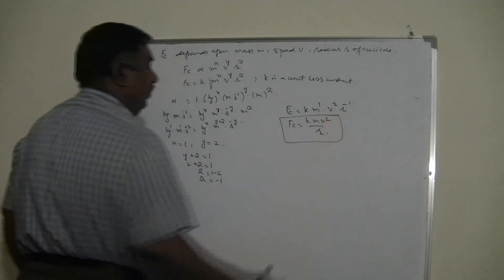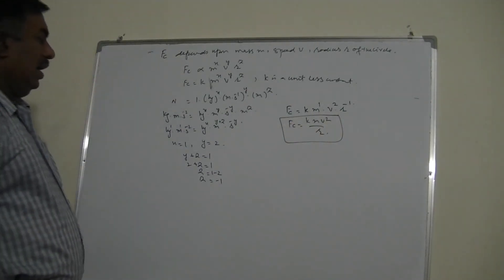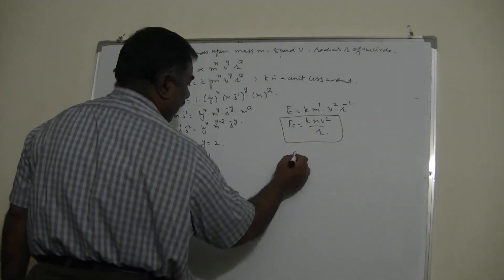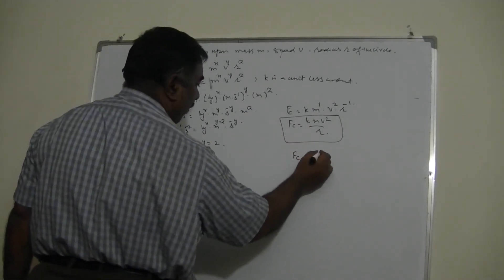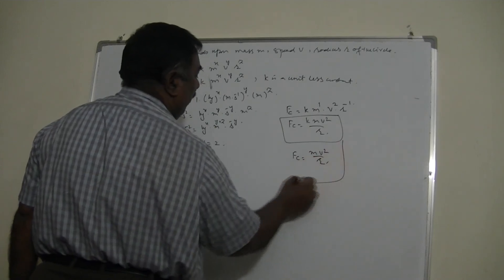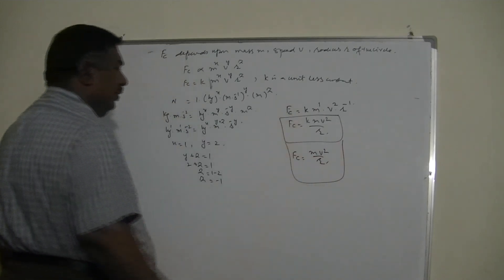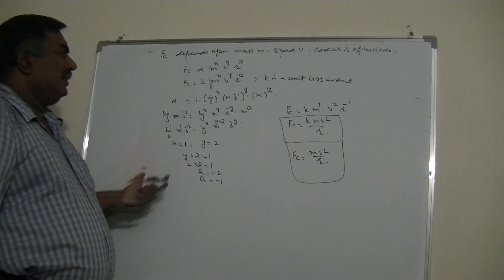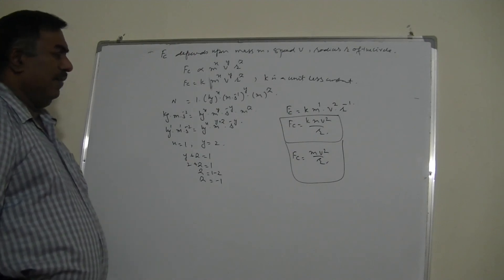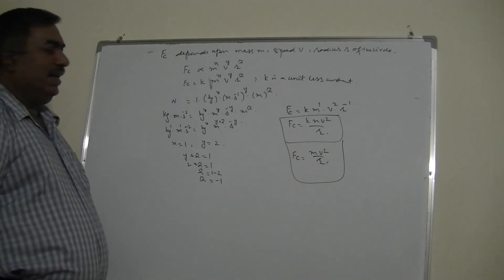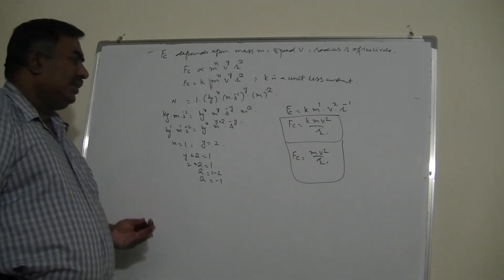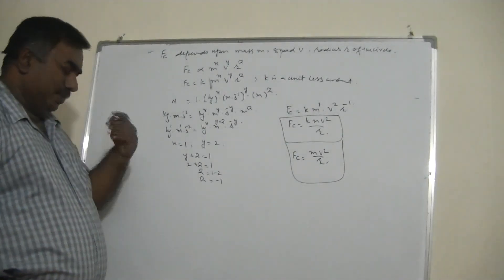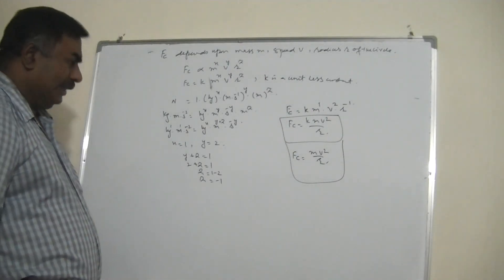So Fc = k·mv²/r. This is the formula derived by the unit method. From experiments we find k = 1, so the actual formula for centripetal force is mv²/r — but we cannot find that k = 1 by dimensional analysis alone. The constant must be determined by experiments or known values.